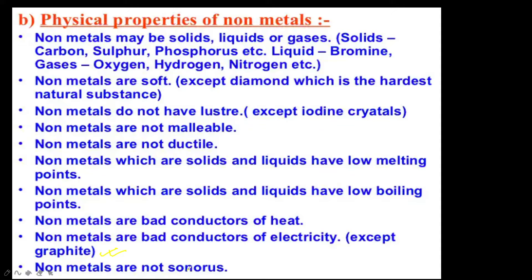Non-metals are not sonorous. In terms of hardness, non-metals are generally soft and brittle — for example, sulfur and phosphorus. Non-metals have very low density. The density of phosphorus is 1.82 g/mL and sulfur is 2.06 g/mL. You just need to remember that non-metals have low density.